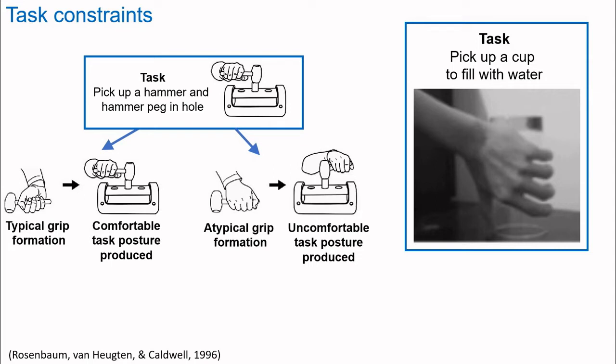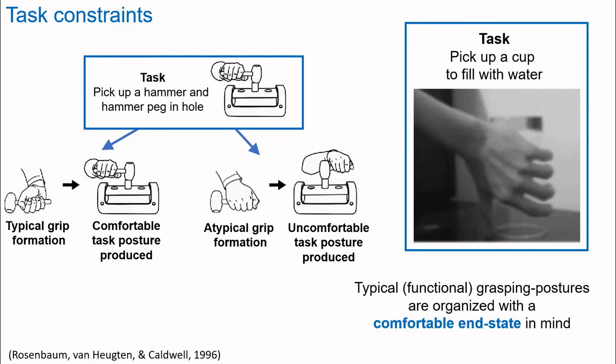We can see this effect in a task we perform each day. If you want to get a drink of water, you need to take hold of a cup and fill it. If the cup is facing downwards, you must turn your hand upside down in order to end up with a comfortable posture for pouring water into the cup and drinking from it. What we're seeing is that functional grasping postures are organized with a comfortable end-state posture in mind.